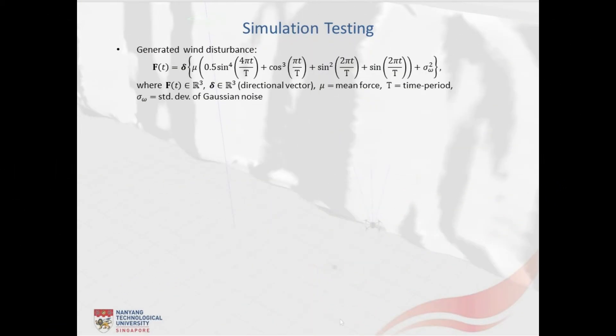The wind disturbance forces in the simulations are generated utilizing this expression, wherein delta represents the directional vector, mu is the mean force, t is the time period and sigma is the standard deviation of the added white Gaussian noise. Within the simulation results, these parameters are selected like this.